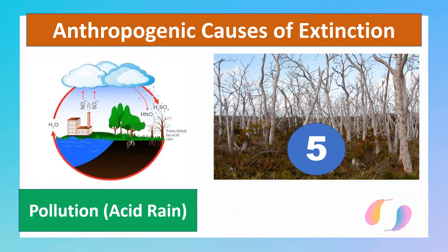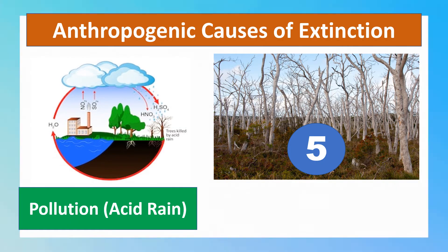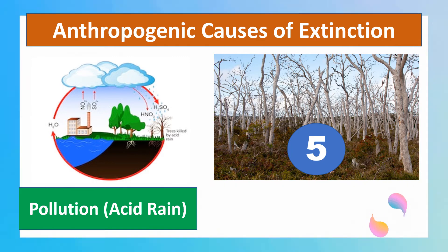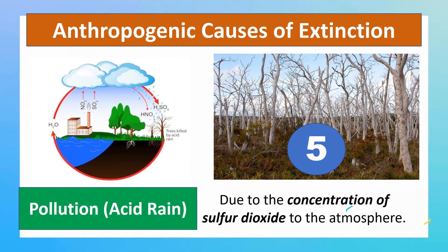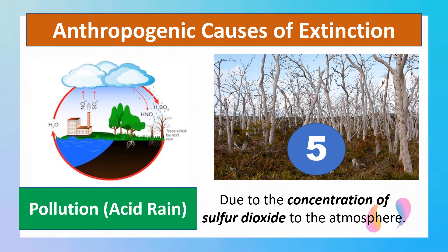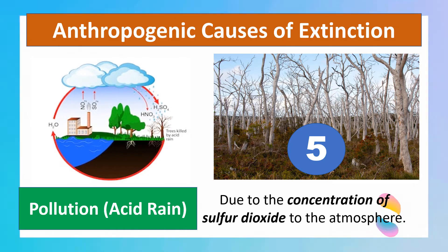We also have pollution. First is acid rain, which is produced due to the high concentration of sulfur dioxide in the atmosphere. This sulfur dioxide emission comes primarily from smoke from vehicles and factories controlled by humans. The sulfur dioxide concentrates within the atmosphere, and when it precipitates, it develops into sulfuric acid, which causes acid rain.